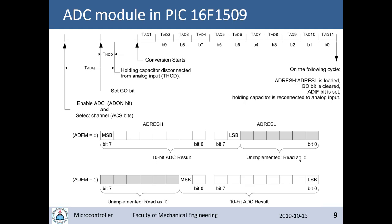To start a conversion, you first enable the module by setting the ADON bit, then wait a little for the circuit to settle. Next, set the GO bit to 1 to start the conversion. After several ADC clock cycles the conversion completes — the result is loaded into the result register, the GO bit is cleared by hardware, and the ADC interrupt flag is set. The result is then stored in RAM.